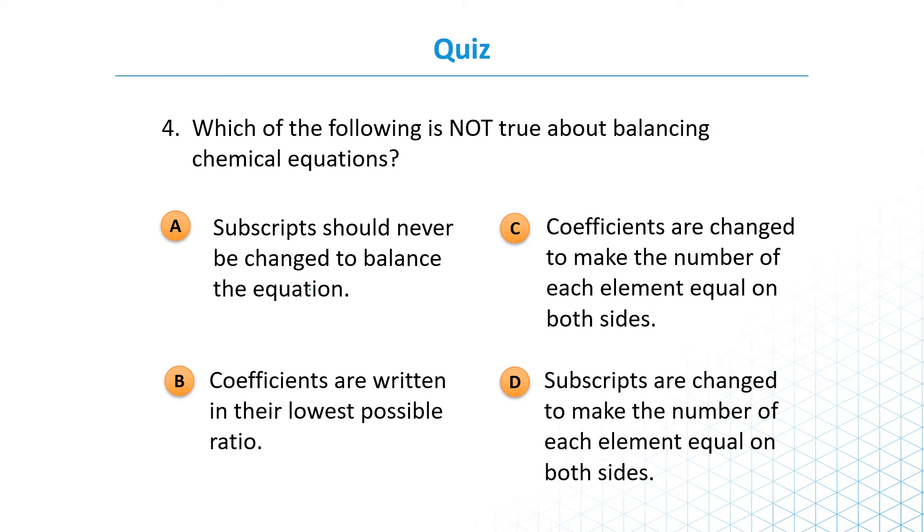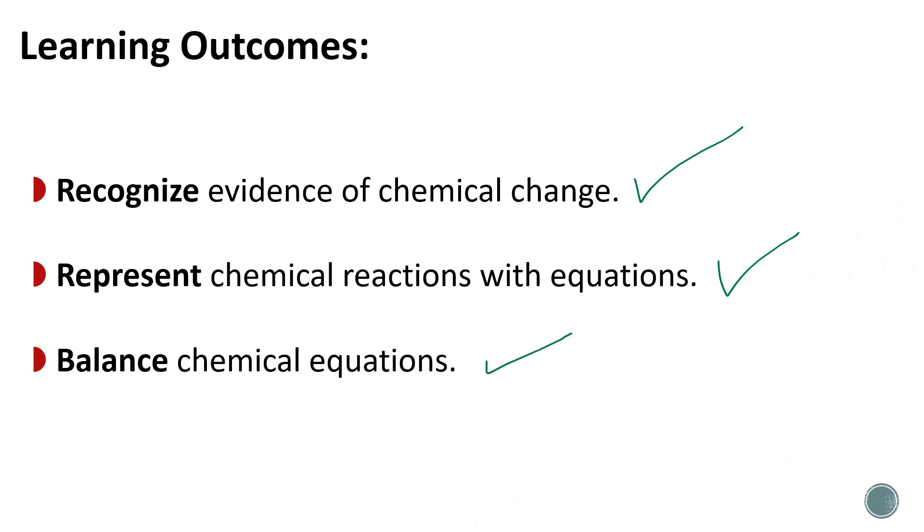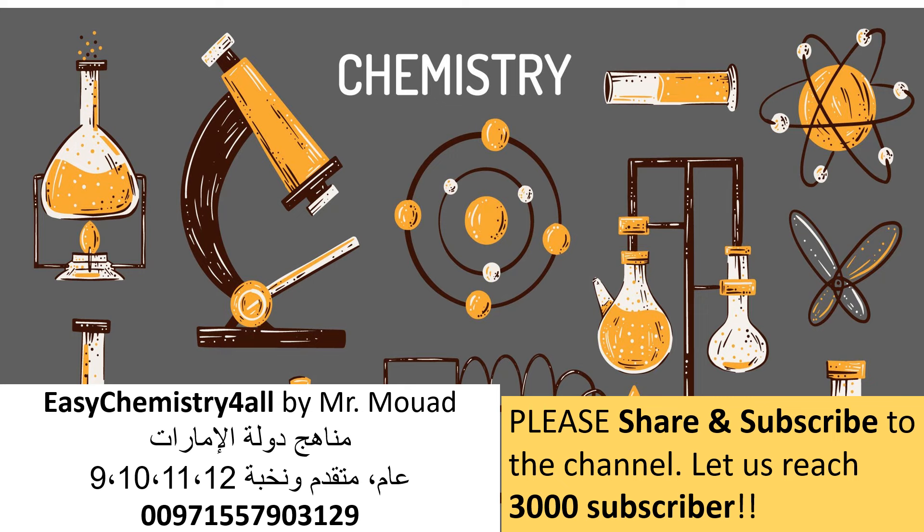Which of the following is not true about balancing chemical equations? Subscripts should - subscripts which are the numbers that are under here - should never be changed. I said to you we should never touch it, which is true. Coefficients are written in their lowest possible ratio, true. Coefficients are changed to make the number of each element equal in both sides. So a, b, c, and all of them are correct - معناه it's true. So d here - we need to change the subscripts. And we finished our lesson guys. So we finished these three learning objectives: recognizing evidence of chemical change, presenting chemical reactions and equations, and balancing chemical equations. So thank you very much for watching the video. Please put a like, subscribe to the channel, add something in the comment section, and I wish you all the best guys until the next time, all the best.